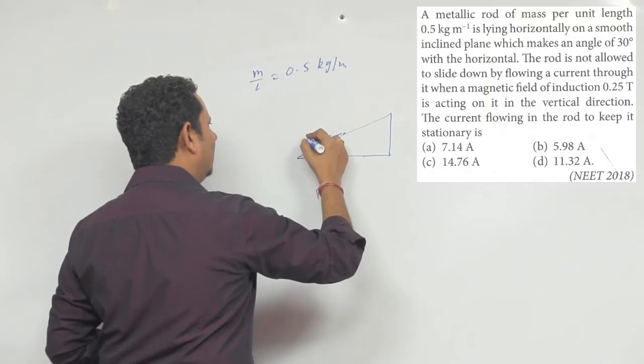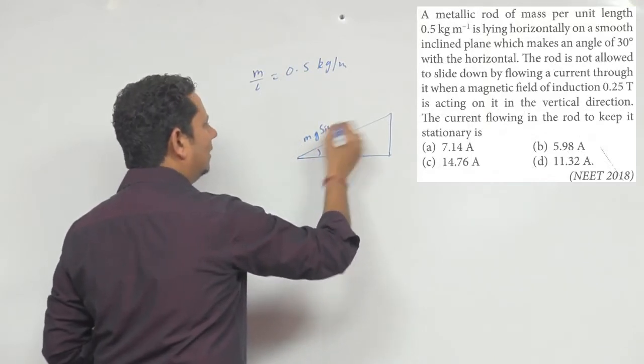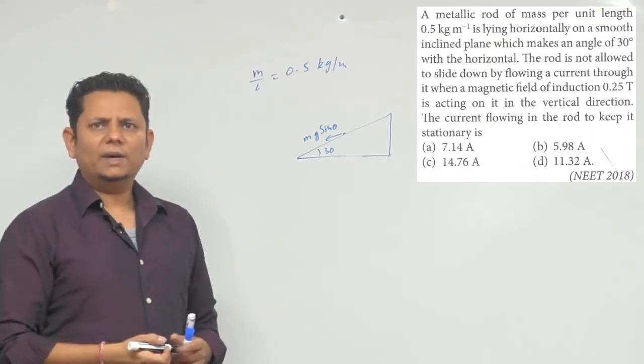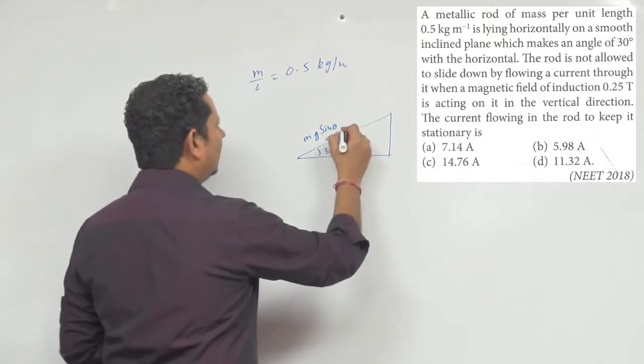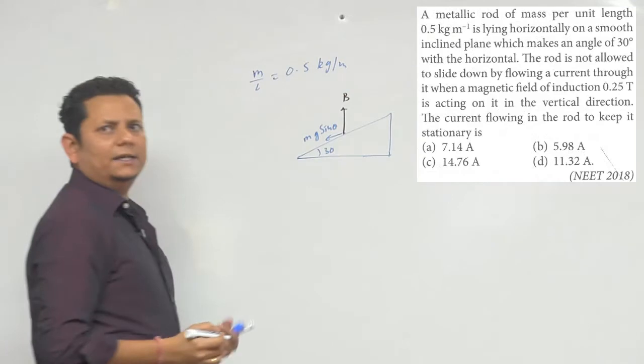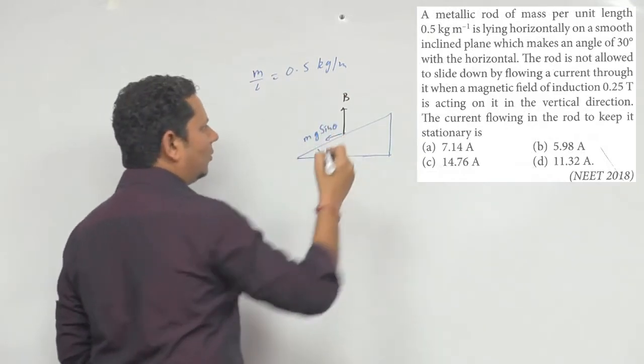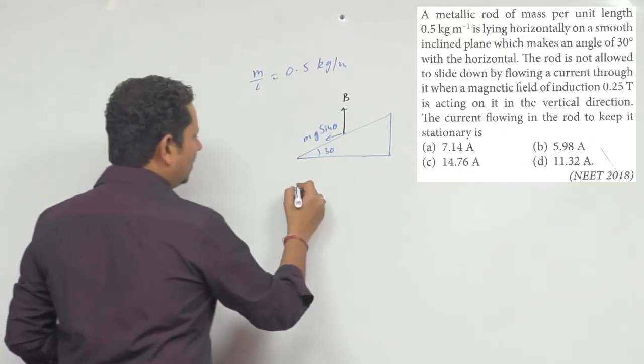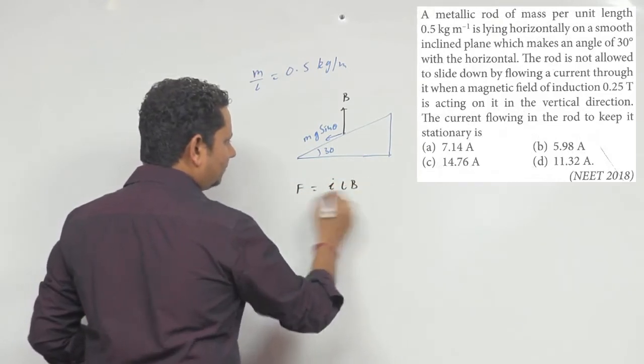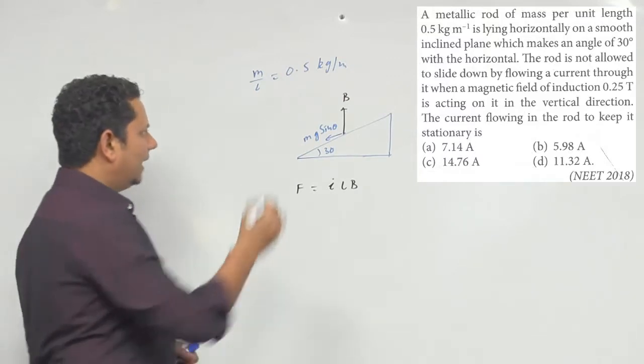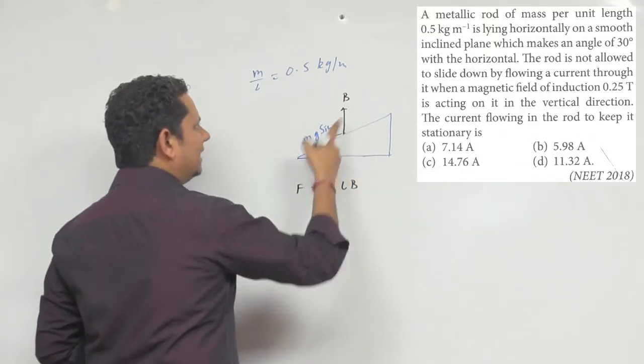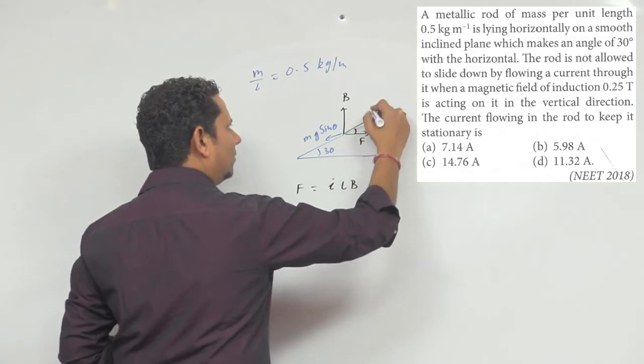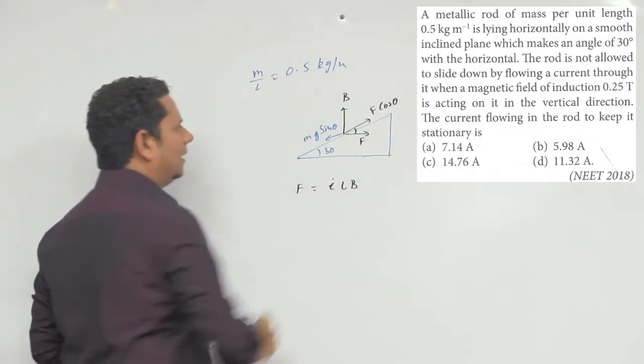We have to know that the downward force is Mg sin theta. The magnetic force F is in this direction. This force has a component at angle 30. So this F cos theta will balance the Mg sin theta.